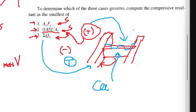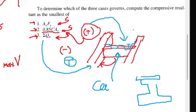As per our reference, lateral torsional buckling of composite beams is not an issue because the beam is connected to the slab, which provides continuous lateral support. However, there should not be a huge size difference between the beam and the slab — if the slab is very small relative to a huge beam, it won't provide meaningful lateral resistance. I have not found a specific code limit defining this, so I leave it to the engineer's judgment.